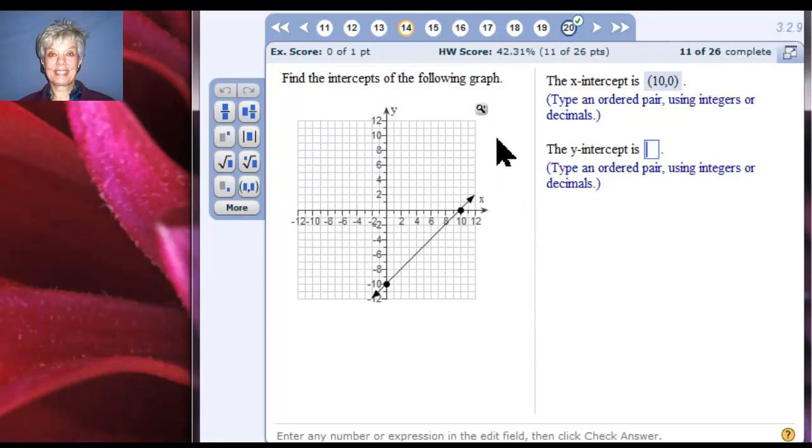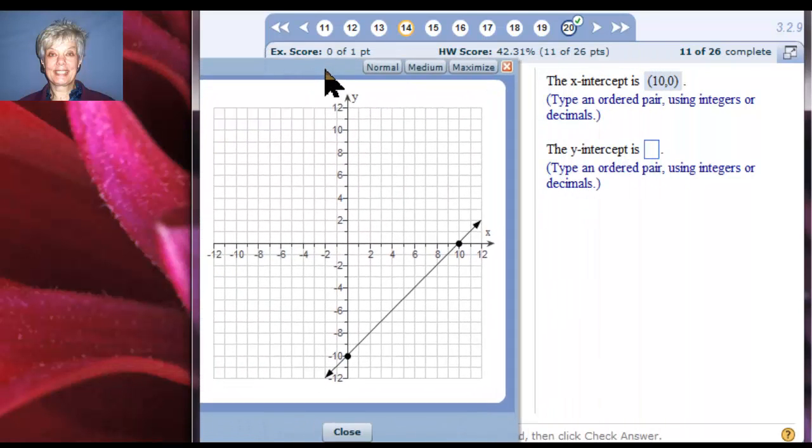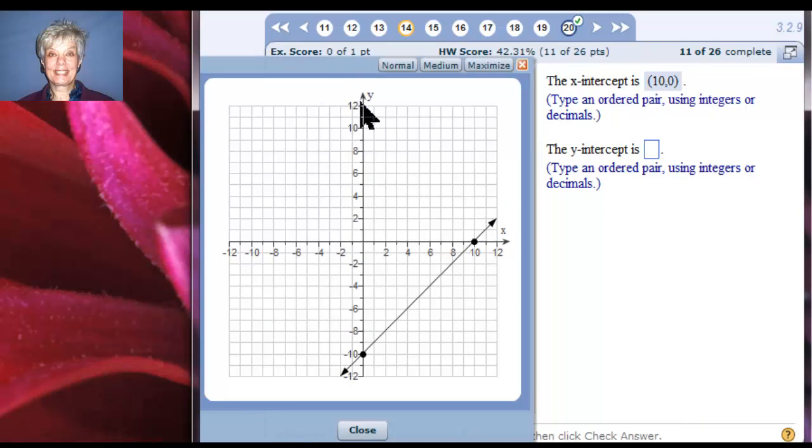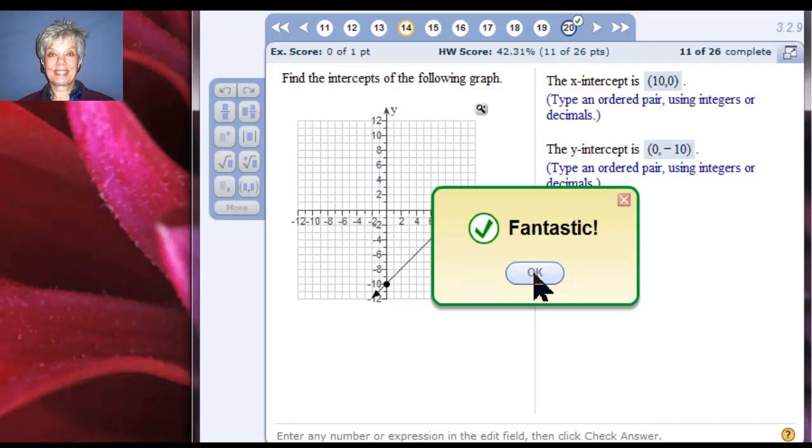Now, if you're like me and you really wish the picture was bigger, we can make it bigger. Let's look at where the line crosses the y-axis, down here at y equals negative 10. Every point on the y-axis has an x-coordinate of 0, so I'll type the y-intercept. Oops, okay, close. You have to close first. Okay, so I'll type this as 0, comma, negative 10, parentheses. There, and I was correct.